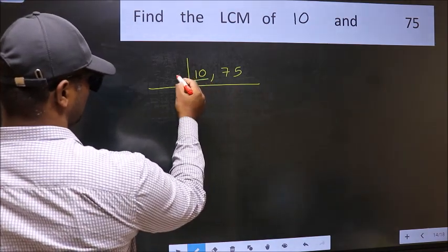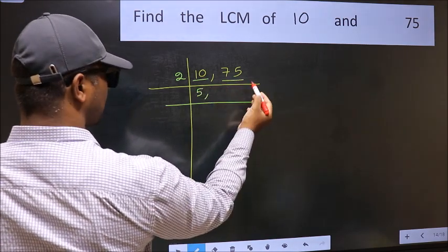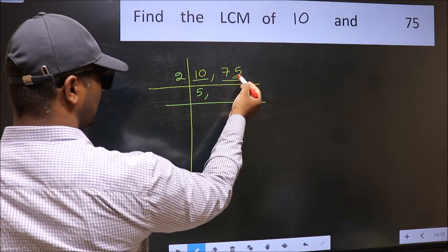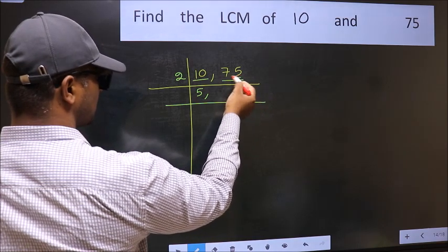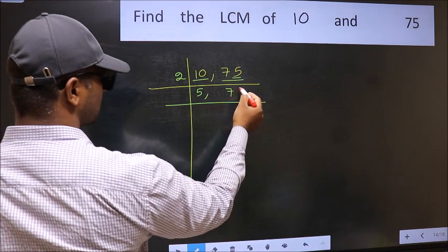10 is 2 times 5. The other number 75, last digit 5, not even. So this is not divisible by 2. So you write it down as it is.